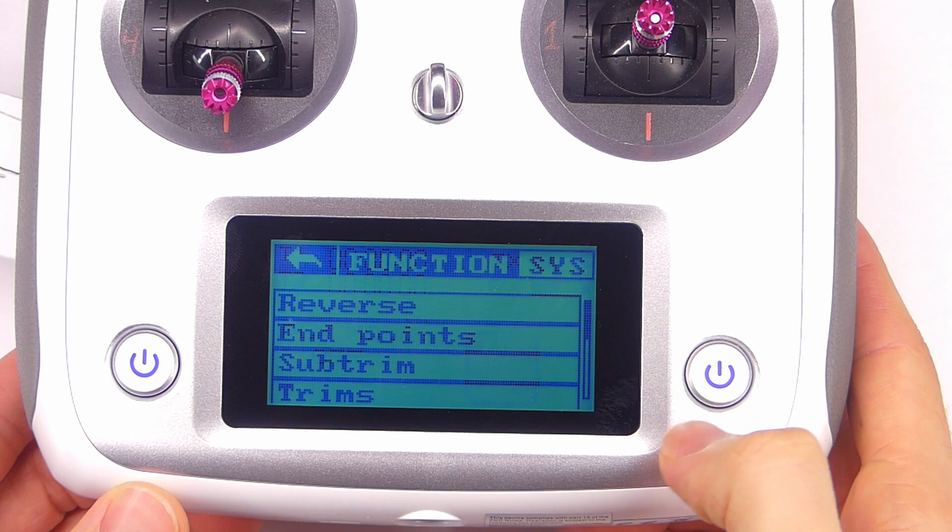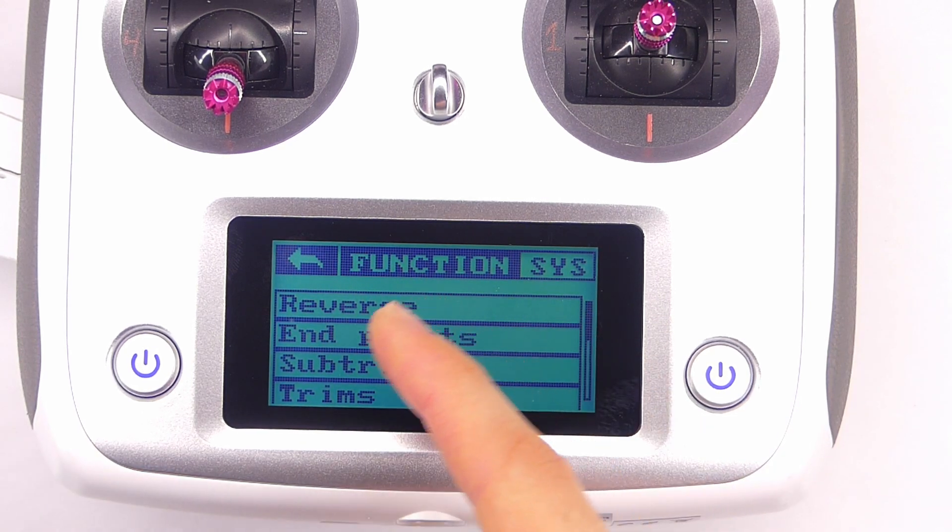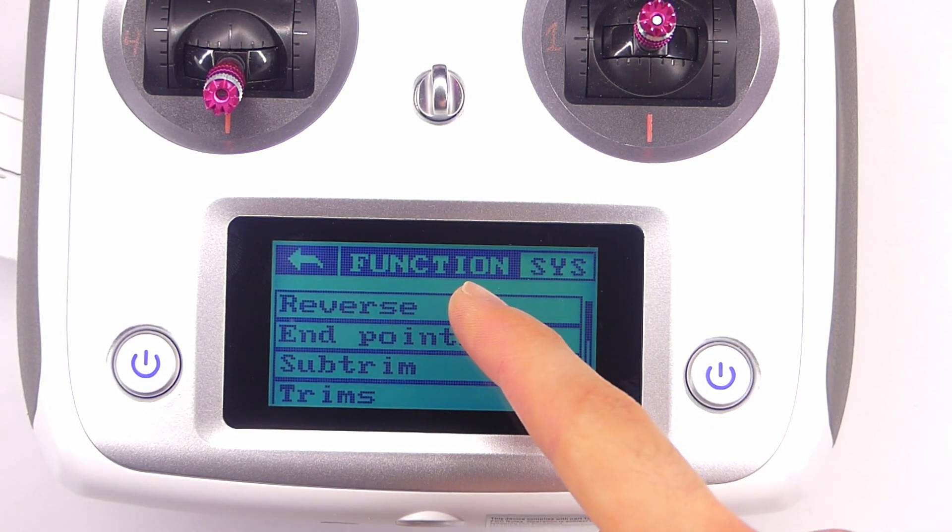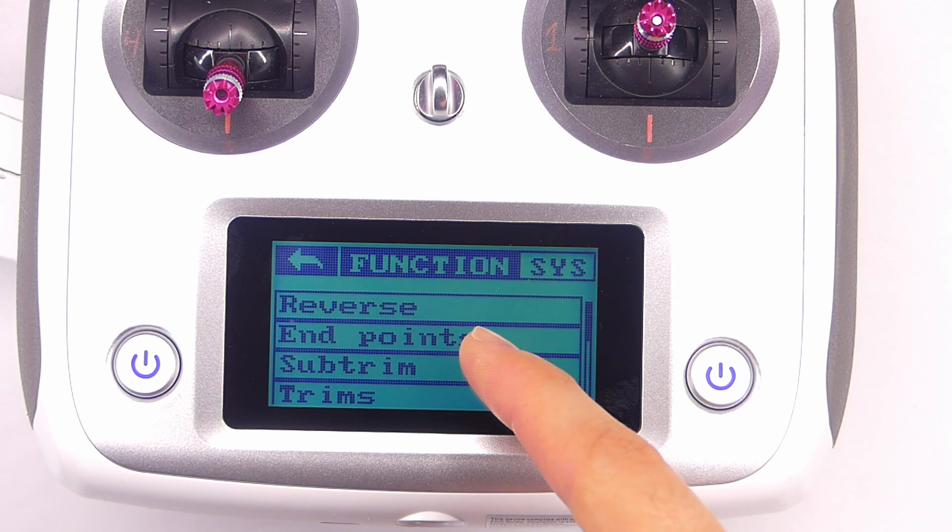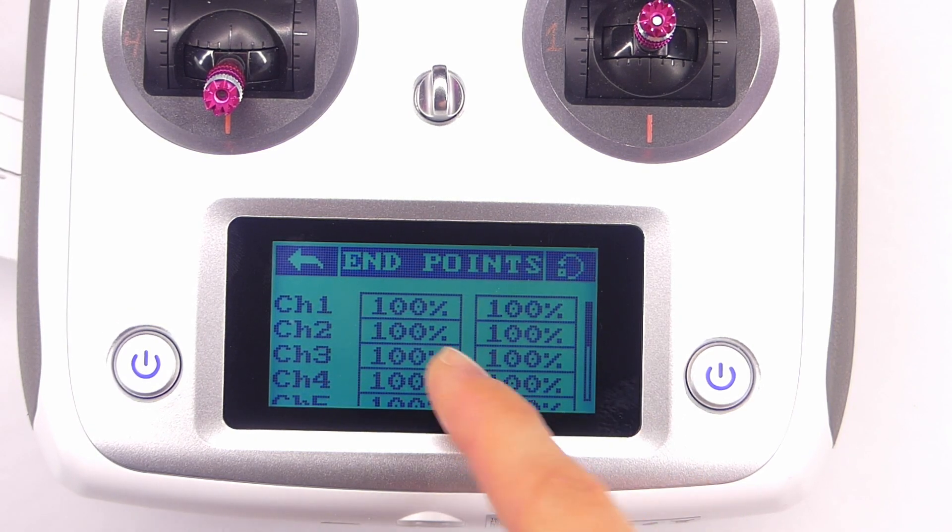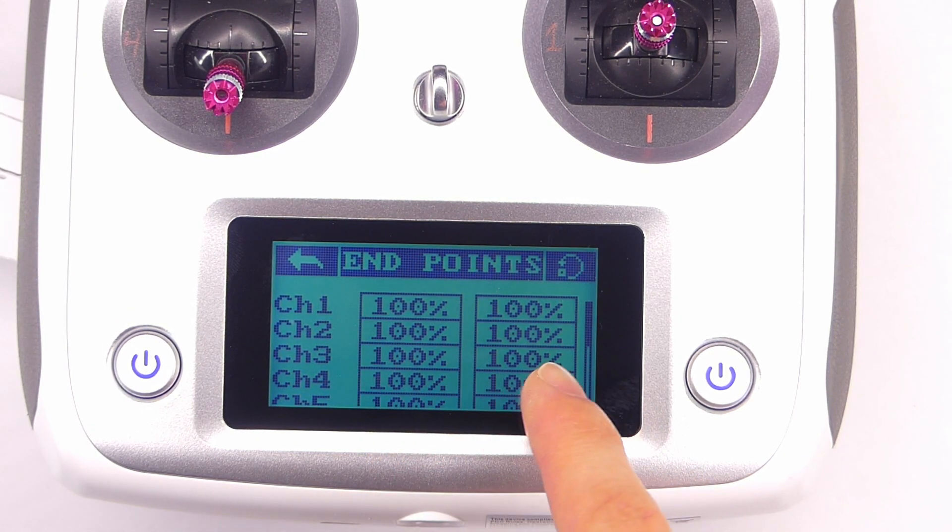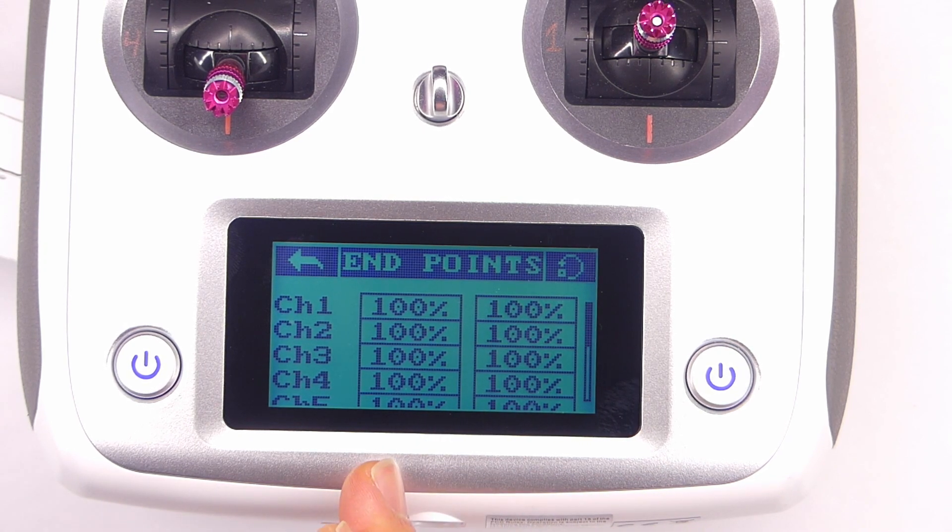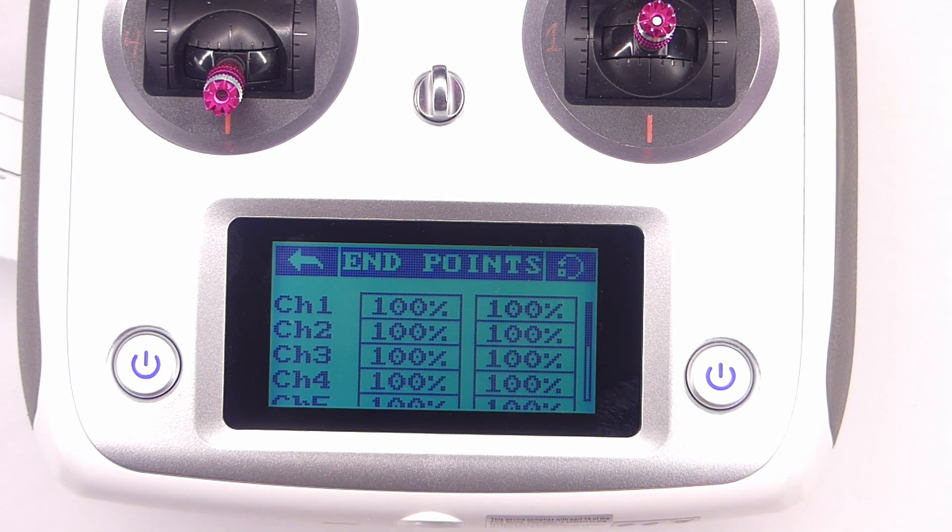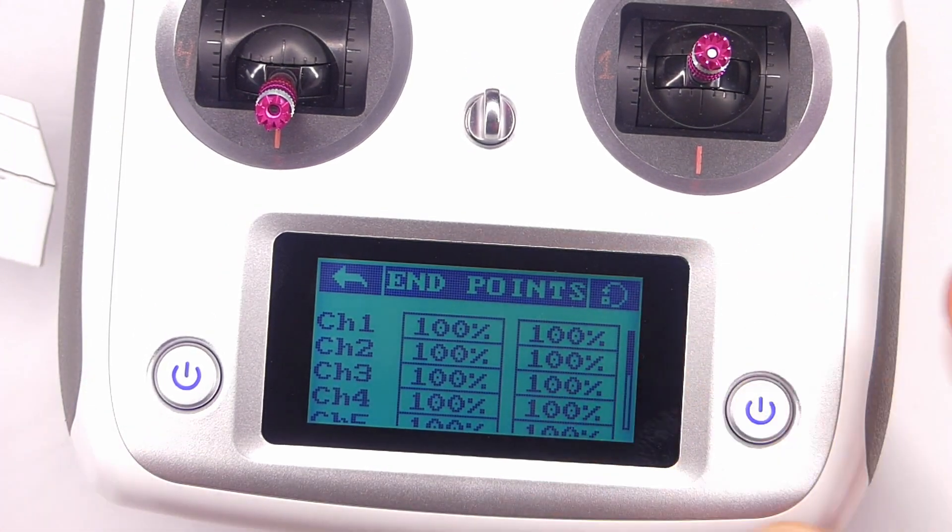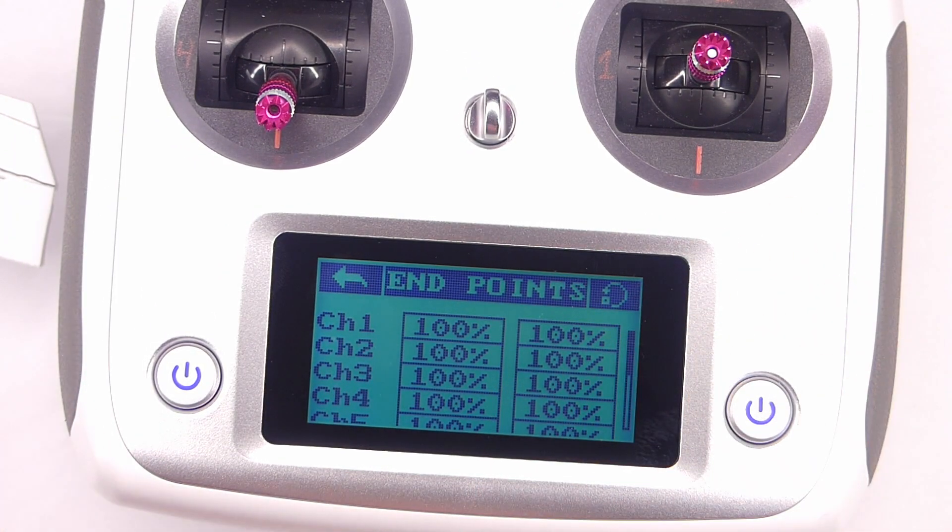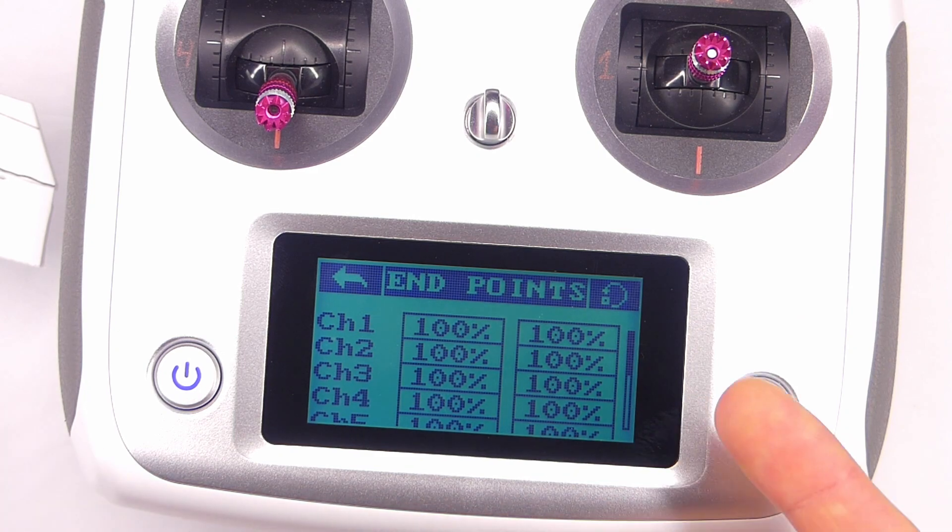So in the transmitter here, we can get into our menu and in the function menu right there, the second from the top is endpoints. And you can see we have 100% and 100%. The left column is minimum and the right column is maximum. And so that'll kind of depend on how you have your servos set up, which direction is which, but for example...